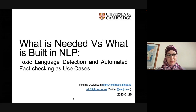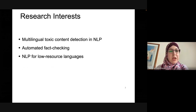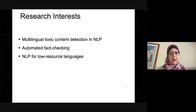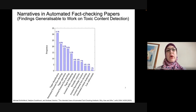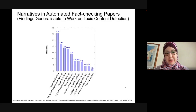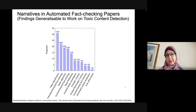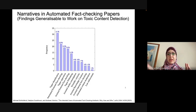I'm in my last days as a postdoc at the University of Cambridge, and I'm very happy to talk about a wrap-up of my work here and also my PhD work at the Hong Kong University of Science and Technology. My research interests are multilingual toxic content detection in NLP, automated fact-checking, and NLP for low-resource languages. I framed this talk this way because, with my colleagues Michael and Andreas, we looked into the narratives of highly cited automated fact-checking papers.